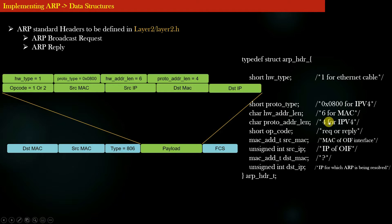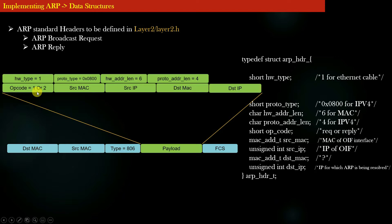The first four fields of the ARP header are constant values. What varies is the rest of the fields. The next field is the opcode — a 2-byte field that indicates whether the ARP message is a broadcast request or a reply. If the opcode is 1, it is an ARP broadcast request; if it is 2, it is an ARP reply. These are the standardized values.